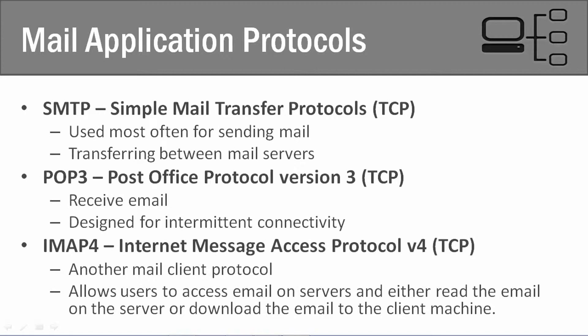However, you can also use IMAP4, which works a bit differently. It allows users to access emails on the email server and either read them on the server or download them to your machine. For example, with an iPhone set up for IMAP, you can either read what's on the email server and have it stay there, or download it to your iPhone and delete it off the server — it's based on your preference.